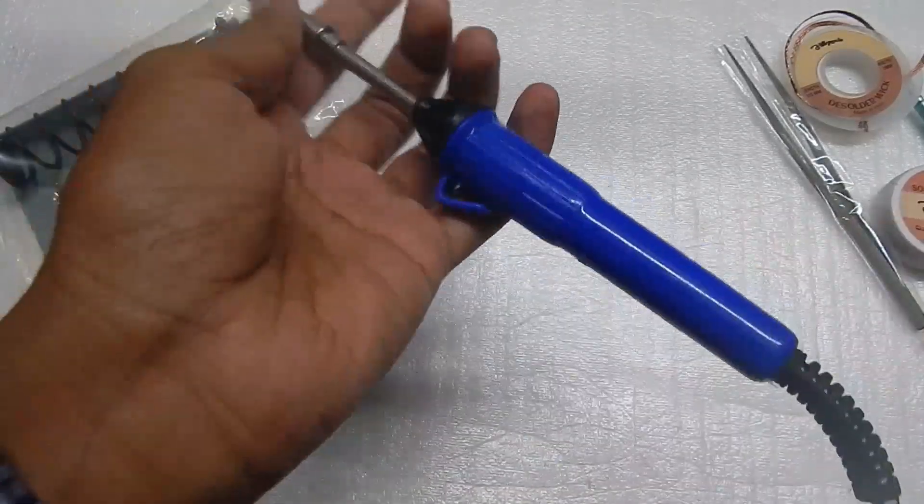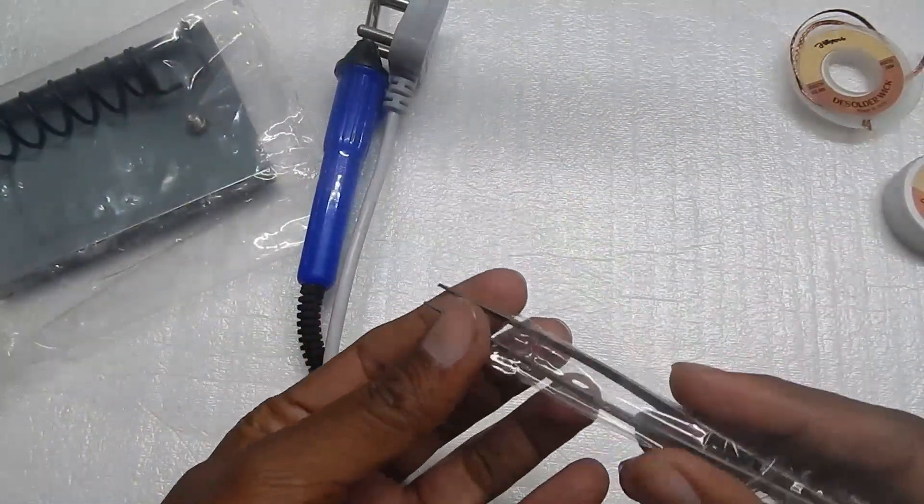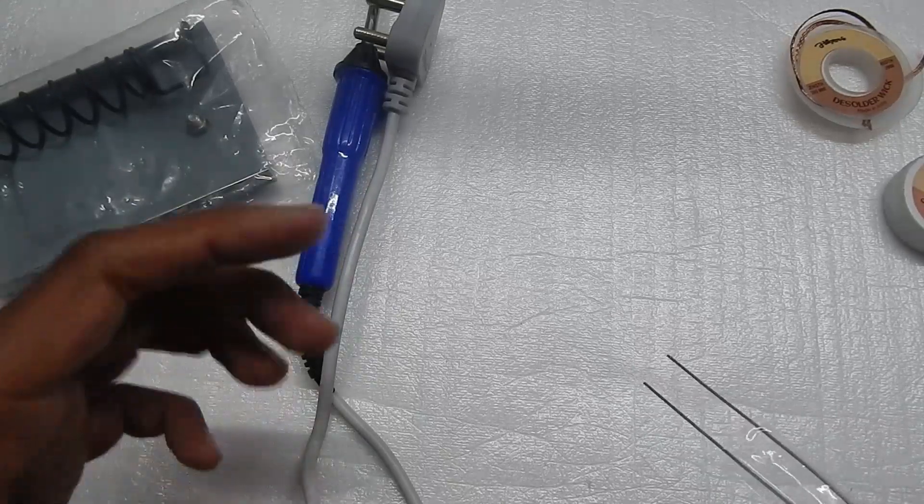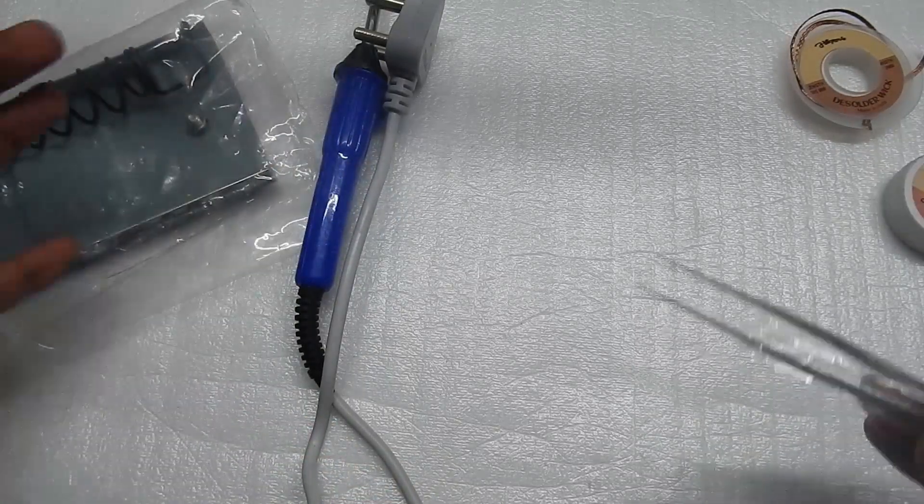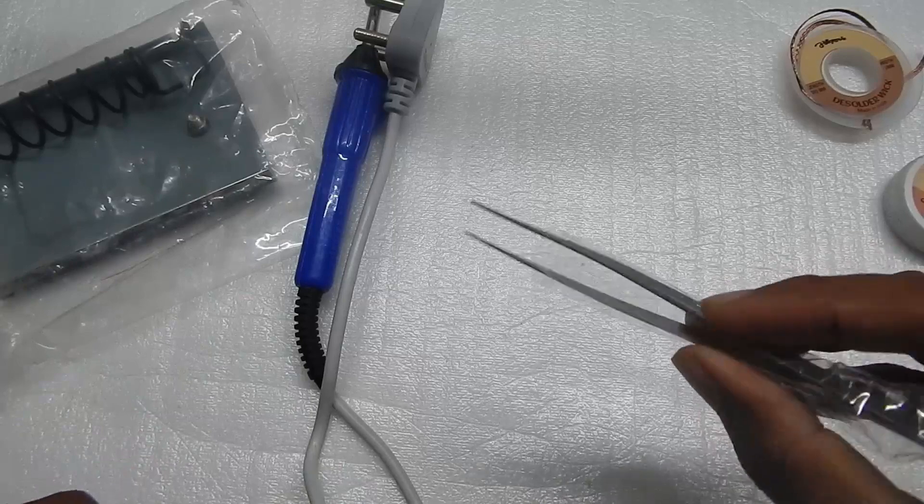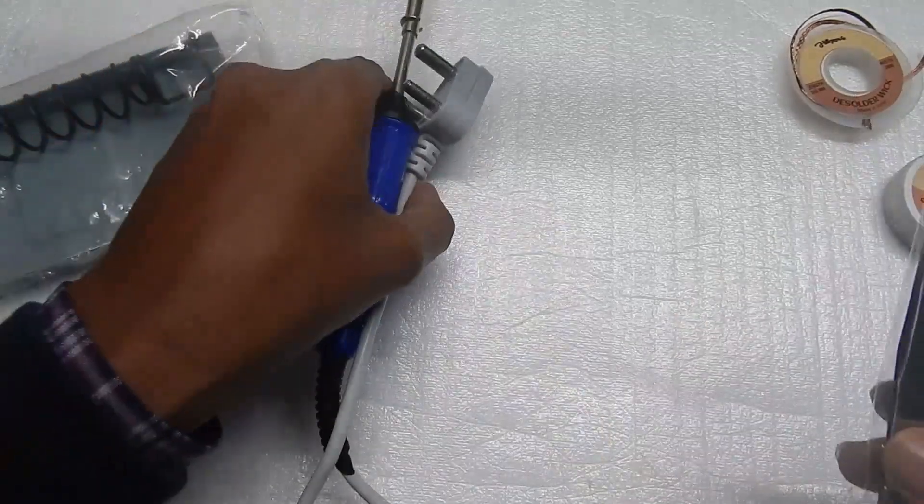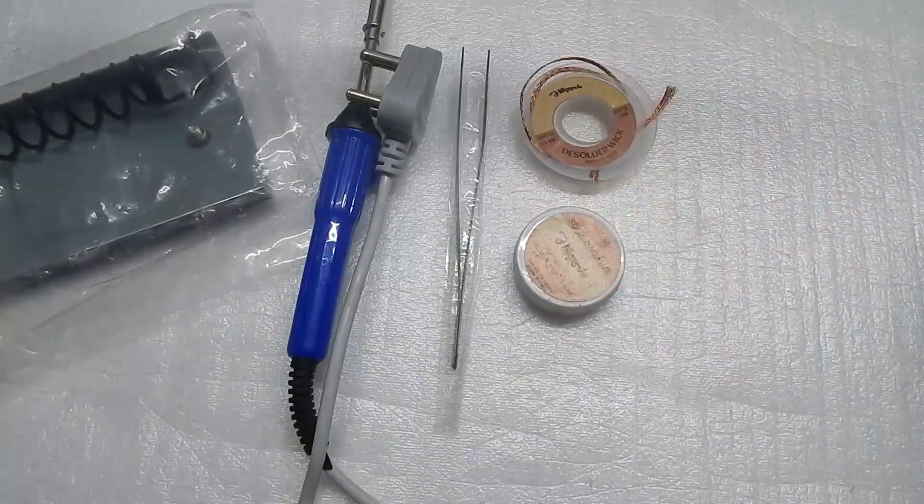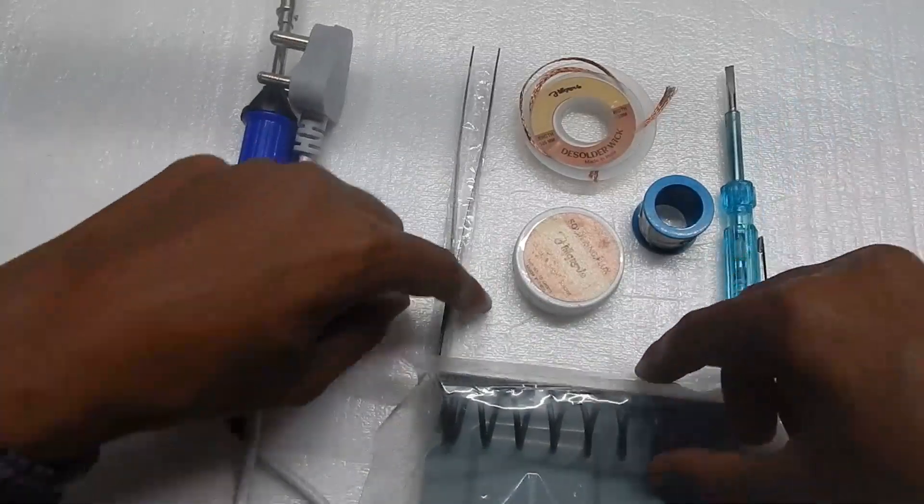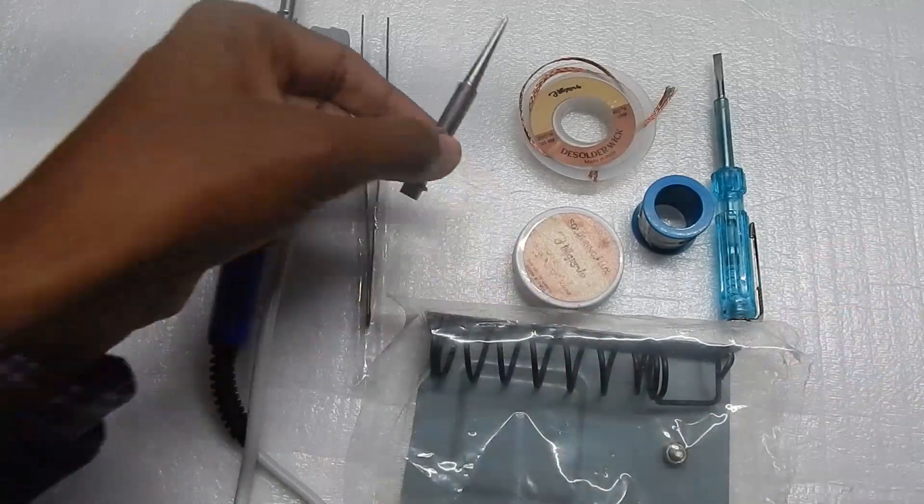You get a small tweezer to grab small SMD components, which is helpful for small LEDs. Recently I was repairing a tube light and with this I'll be able to easily grab LEDs off any board. Overall you're getting seven pieces, plus I got an extra 18 watt bit for free which wasn't supposed to be included.